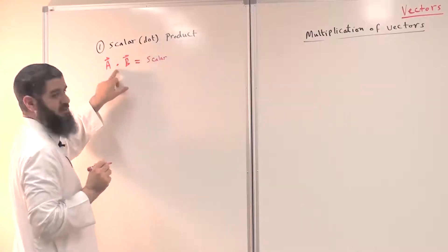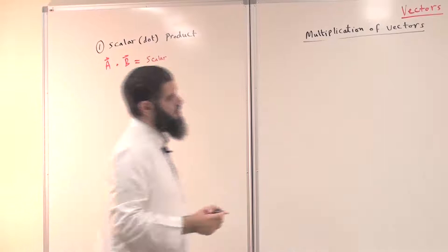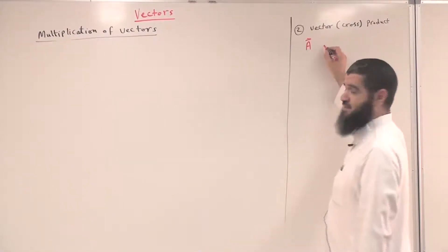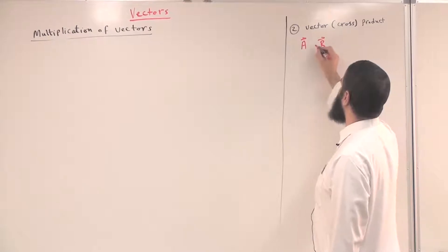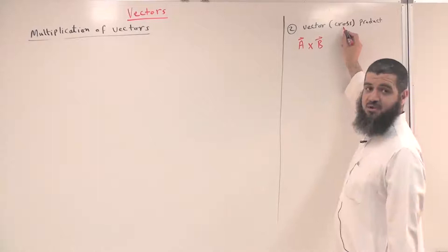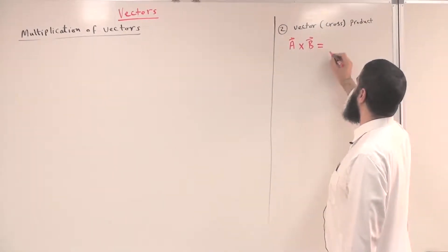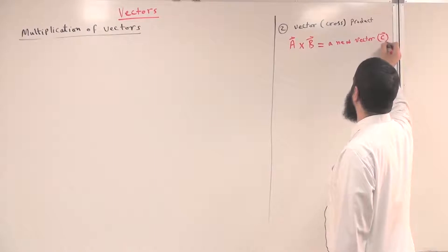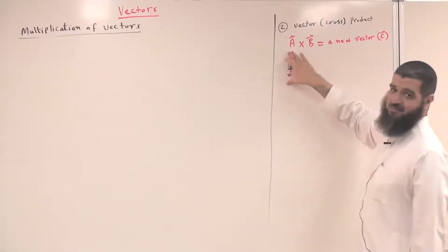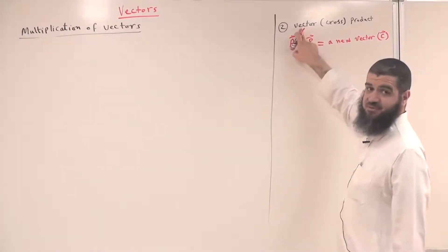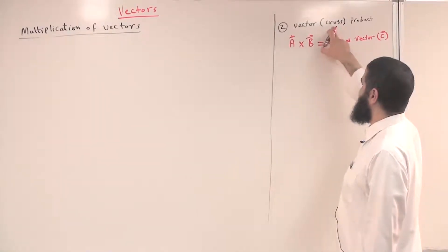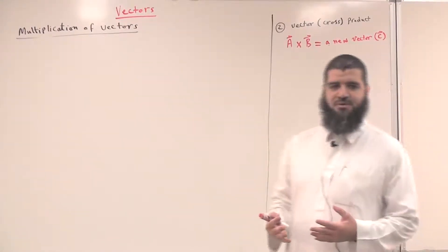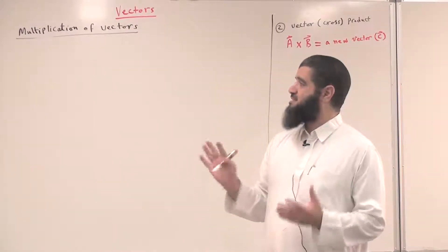We call it dot product because the symbol of this multiplication is a dot. For the vector or cross product, you have vector A and vector B, and the symbol for this multiplication is a cross — this is why we call it cross product. The result is a new vector, which we can call C. In our course, Physics 101 and Physics 102, we will encounter both types of multiplication.